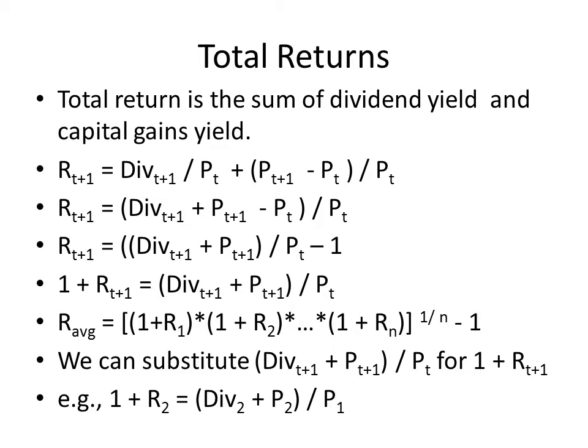And we can do a little manipulation of this thing. If you'll notice, both of those items are divided by the price at time t, which makes total sense, because that's what we had to invest in order to be able to get the price at time t+1 and the dividend at time t+1.